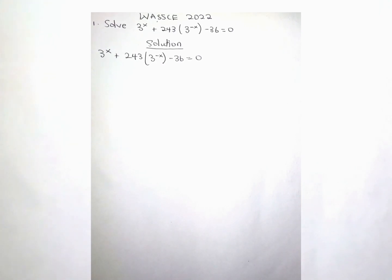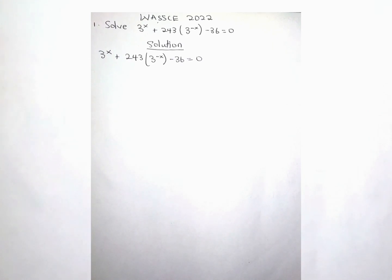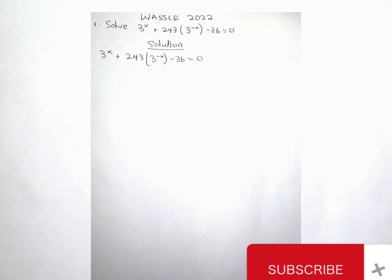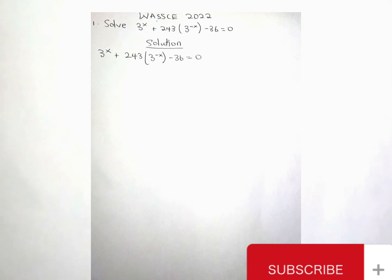Elective Mathematics WASSCE 2022. The first question was: solve 3 exponent s plus 243 multiplied by 3 exponent negative s minus 36 is equal to 0. Let's begin the solution. 3 exponent s plus 243 multiplied by 3 exponent negative s minus 36 is equal to 0.